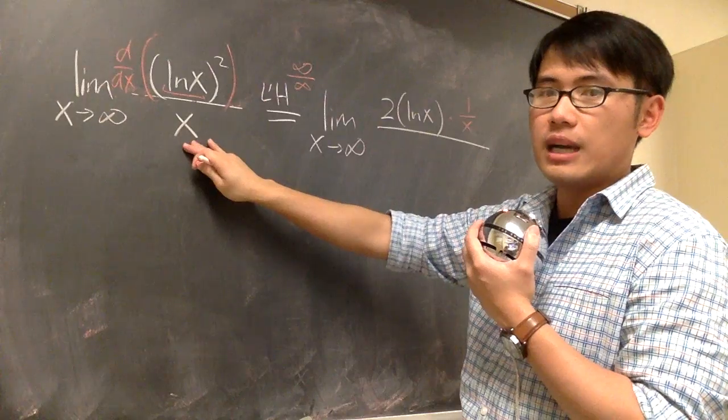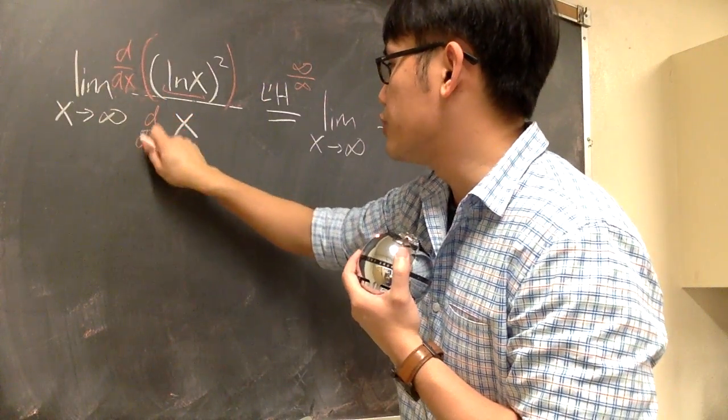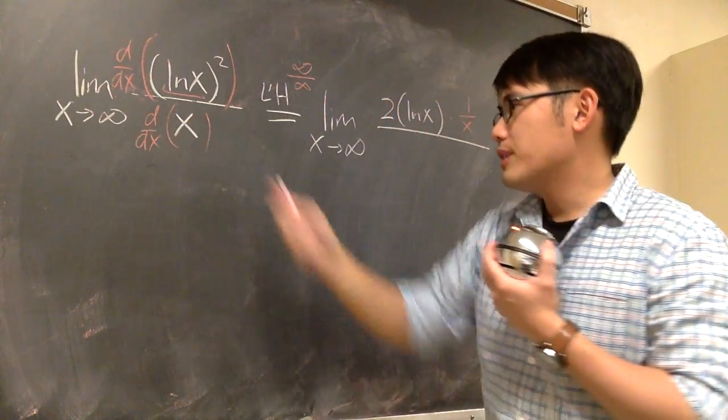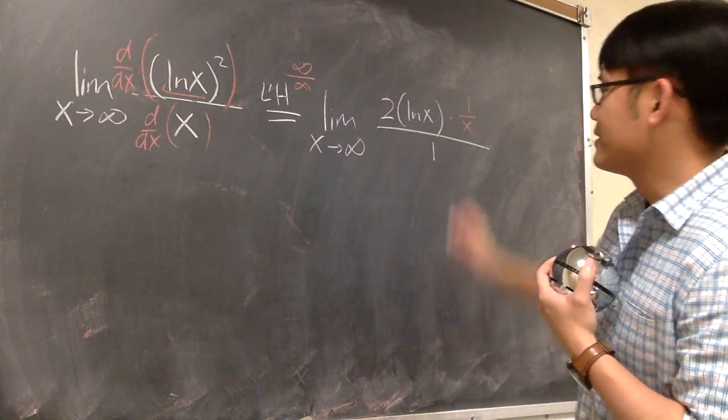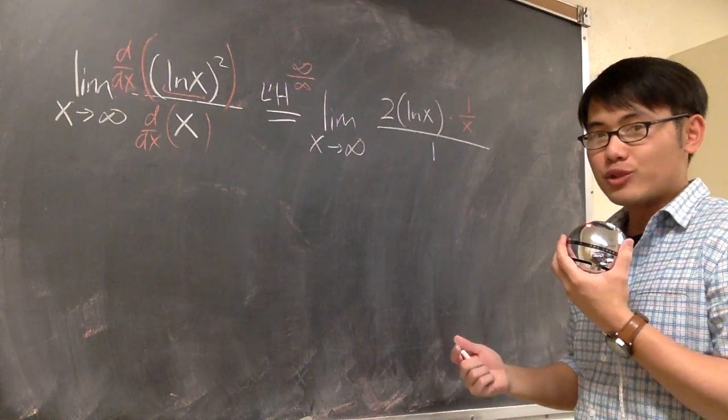So that will be for the numerator, and now let's look at the denominator. On the denominator, we also differentiate that. And then, that's pretty easy. The derivative of x is just 1. So that's not too bad.